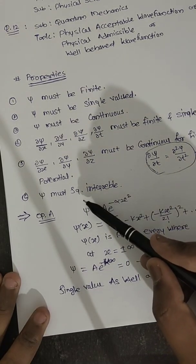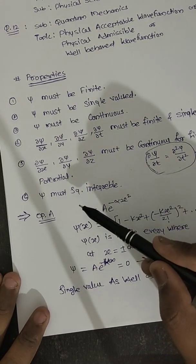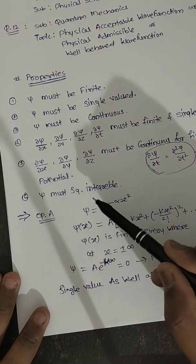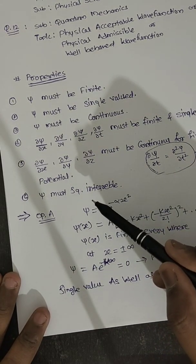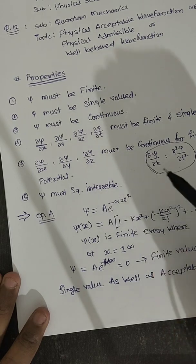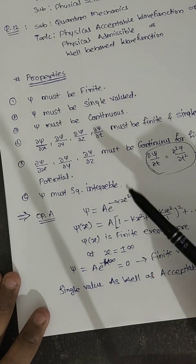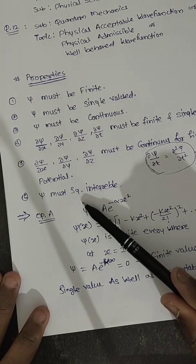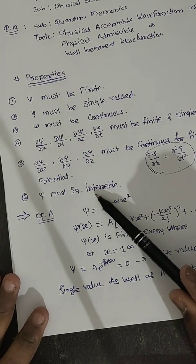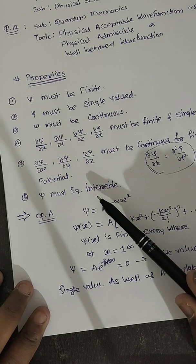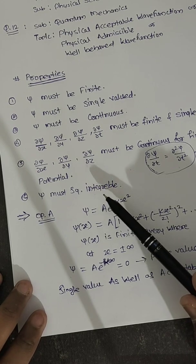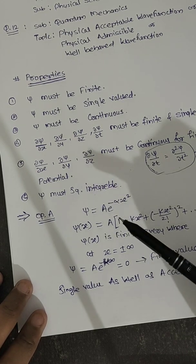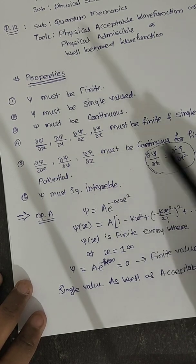The last property: psi must be square integrable. Square integrable means the probability must be finite in all space. So psi must be square integrable and finite throughout all space.